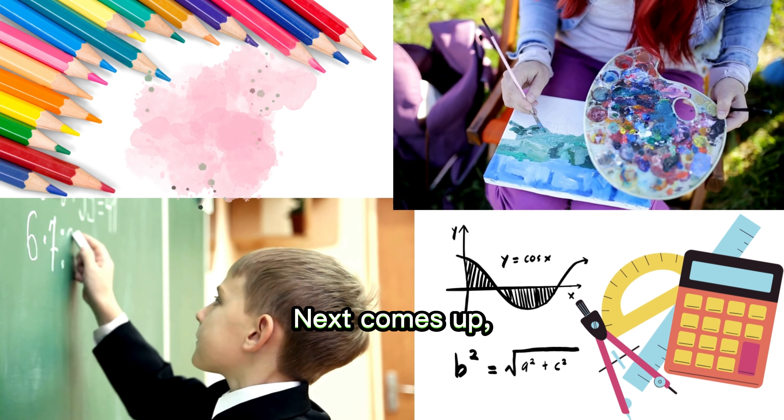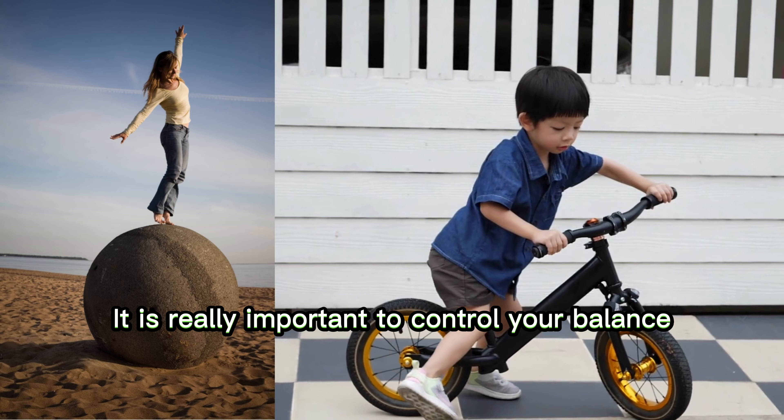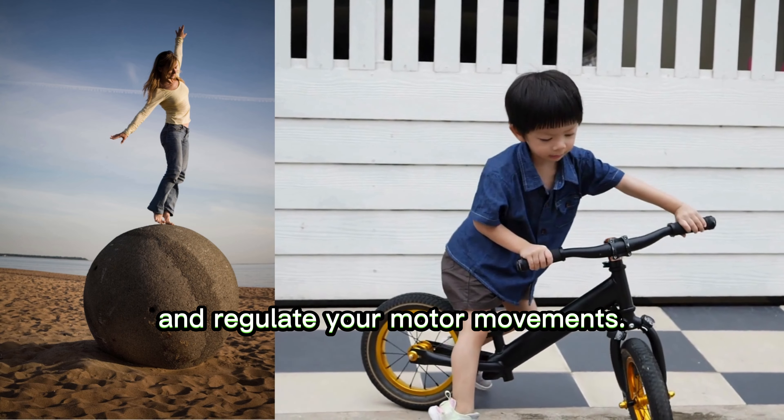Next comes the cerebellum, which is located at the backside of the brain. It is really important to control your balance and regulate your motor movements.